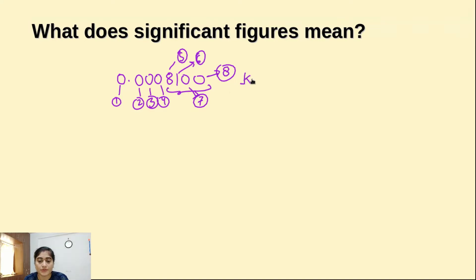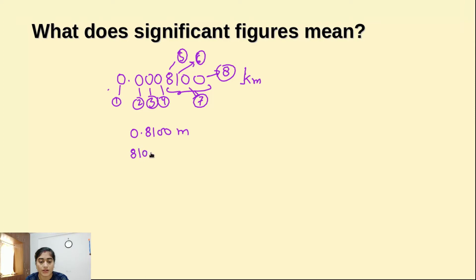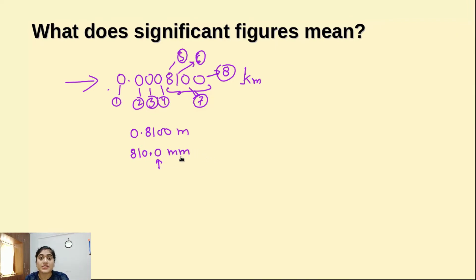Suppose this value is in kilometers. If I am converting this value to meters, it will be 0.8100 meters. And if I convert further, it will be 810.0 mm. What this value tells us is that the measurement is precise up to 1 digit after the decimal. So by these last 4 digits only we can say how precise your measurement is.